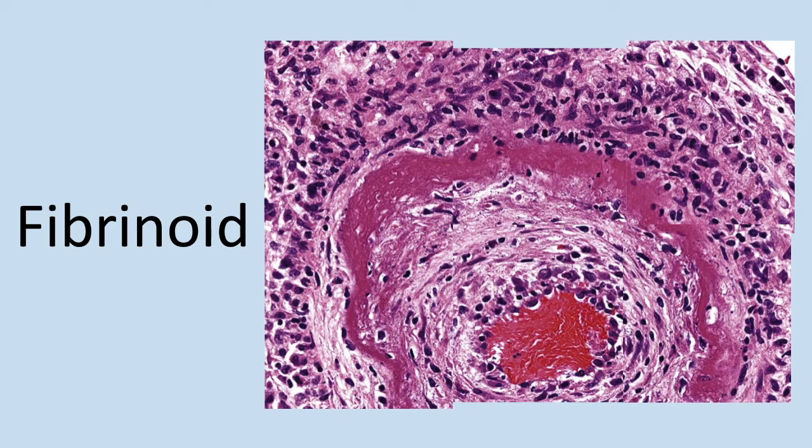Now ultimately, regardless of the type of necrosis, necrotic cells and their contents will be taken up by phagocytosis and broken down by surrounding leukocytes that are still alive and healthy. If not destroyed, these leftover cells are often a location for the deposition of calcium salts and other minerals — they become calcified — and this is known as dystrophic calcification.